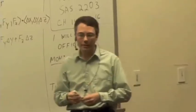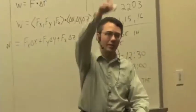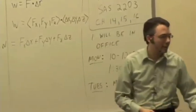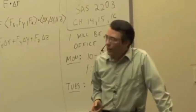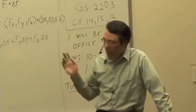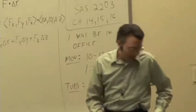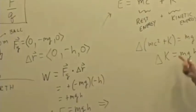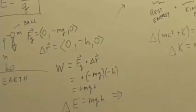Delta K is equal to MGH. Mass is positive, G is positive, H is a positive number. What happened to the ball's kinetic energy? It increased. It makes sense because the force and the displacement are in the same direction. The work is positive. Positive work means positive change in energy.